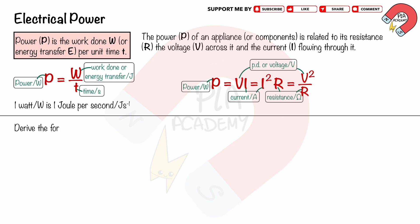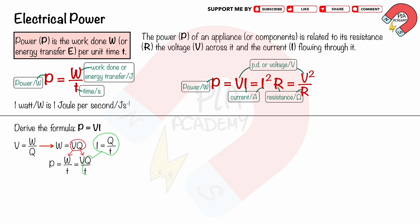We can derive the formula P equals VI as follows. From the formula V equals W over Q, and rearranging as W equals VQ. Substituting W equals VQ into P equals W over T, and using I equals Q over T, we get P equals VI.